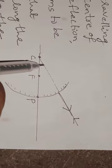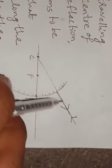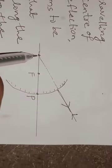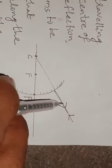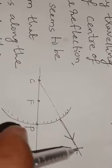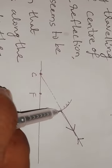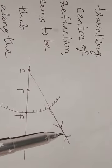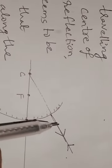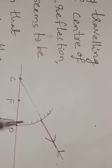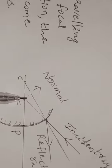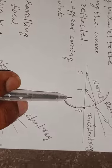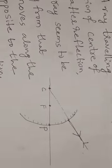In Rule 3, the incident ray moves towards the center of curvature, and after reflection, the reflected ray moves along the same path. The reflected ray appears to come from the center of curvature, but it is actually coming from the surface. Here the incident ray and the reflected ray both travel along the same line, and the laws of reflection are valid for this rule, as well as Rules 1 and 2.